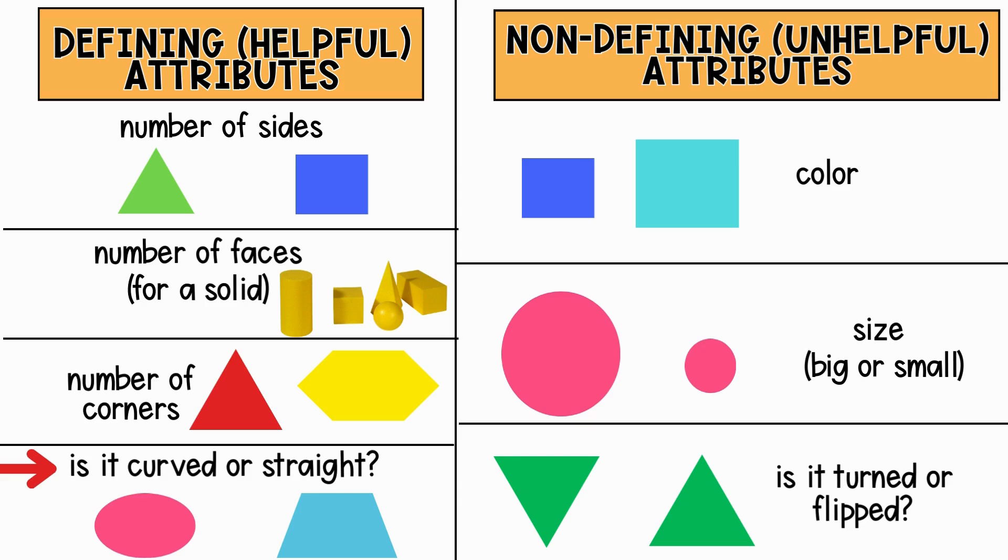Some non-defining attributes are the color of the shape, the size of the shape, and whether the shape is turned or flipped. None of these attributes will help us figure out what the shape is.